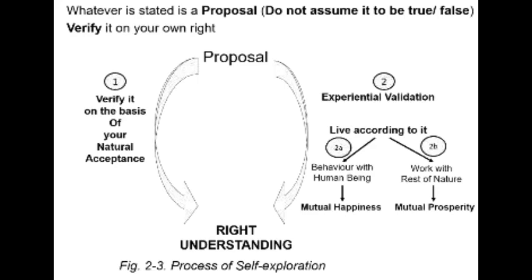Look at figure 2.3 — it represents the complete process of self-exploration. On the left arrow, from proposals to right understanding, it denotes that we need to verify the proposal on the basis of natural acceptance. Once you verify the proposal, then, as shown in the right arrow, you need to experientially validate it by living according to it. If behavior with human beings leads to mutual happiness, and work with the rest of nature leads to mutual prosperity, we can assess that the proposal has reached right understanding.